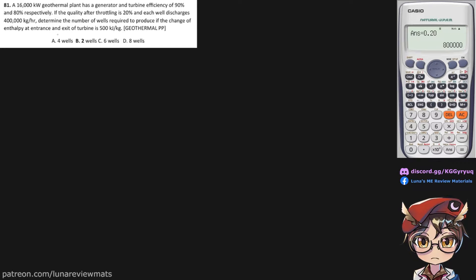A 16,000 kW geothermal plant has a generator and turbine efficiency of 90 and 80% respectively. eg is 0.9, et is 0.8. If the quality after throttling is 20%, that's our x, and each well discharges 400,000 kg per hour, that's called the capacity of our well.